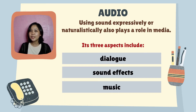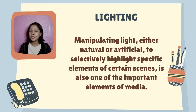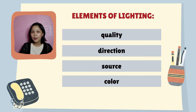Audio: using sound expressively or naturalistically plays a role in media. Its three aspects include dialogue, sound effects, and music. Lighting involves manipulating light, either natural or artificial, to selectively highlight specific elements or certain scenes. Elements of lighting include quality, direction, source, and color.